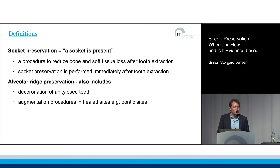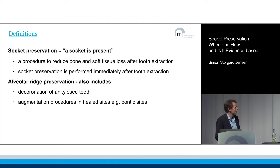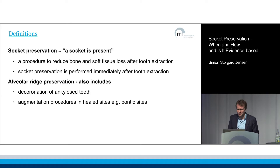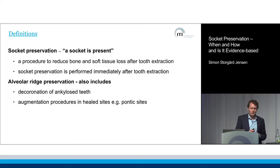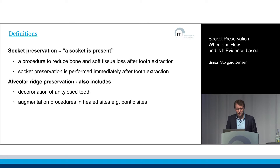This is a little bit different terminology. Socket preservation indicates that a socket is actually present — it's a procedure to reduce bone and soft tissue loss after tooth extraction, performed immediately after the tooth is extracted. Alveolar ridge preservation is a broader term, which also includes the de-coronation of ankylosed teeth and augmentation in areas where we plan to have pontic areas in the future.